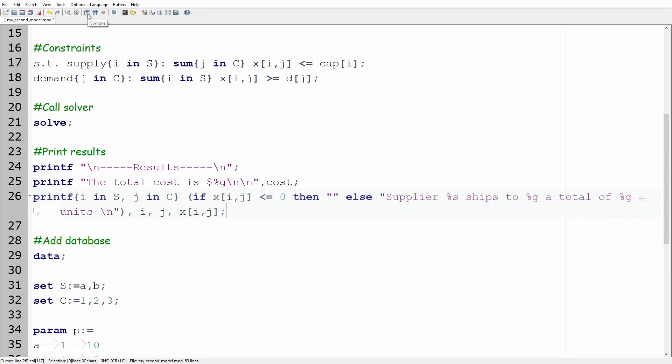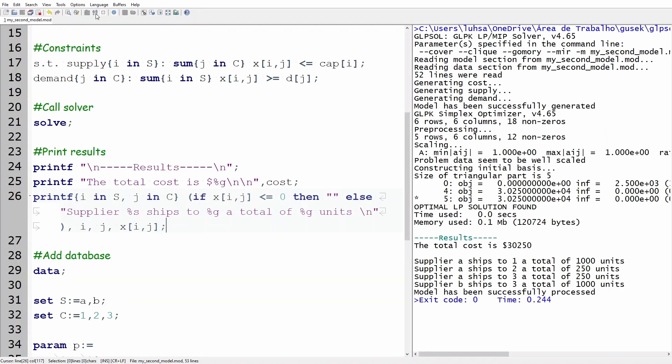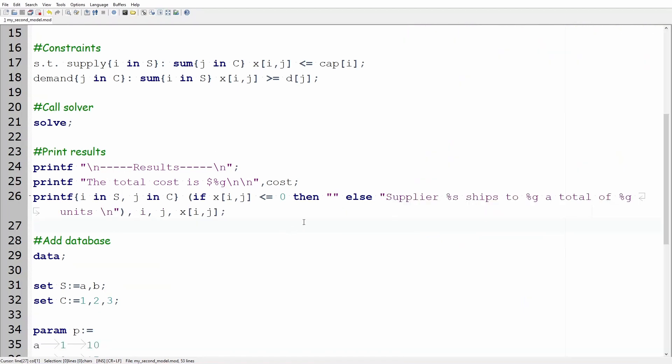If you run the model you print the results only for the positive variables as you see on the terminal. Before we conclude this tutorial let's do one more thing.